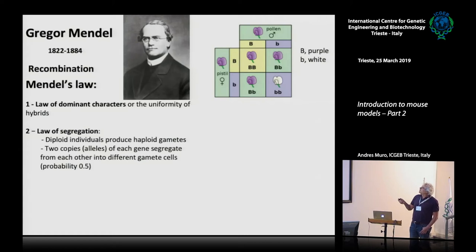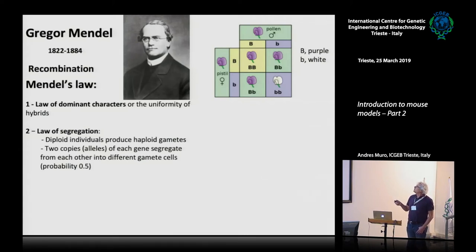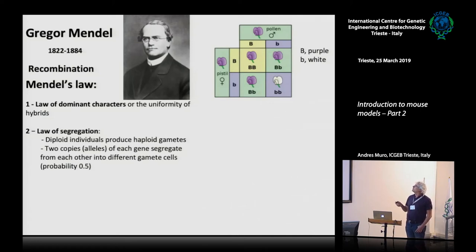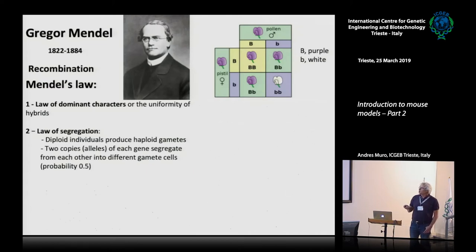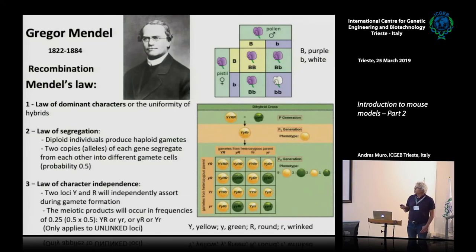If we have heterozygous pollen — let's say we cross heterozygous pollen by heterozygous pistil, female by male — then we are going to have the proportions that we all should know.